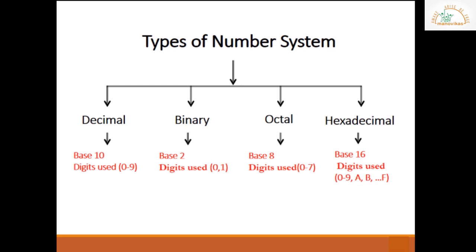Binary number system. The base is 2, so the digits which are used in this system are 0 and 1. The combination of 0 and 1 can be used to make any number in this number system.